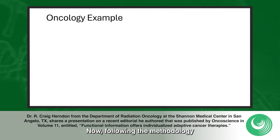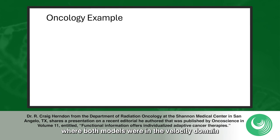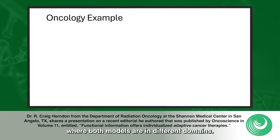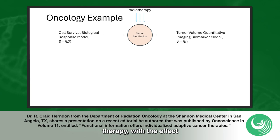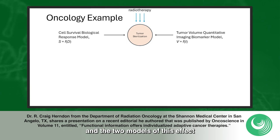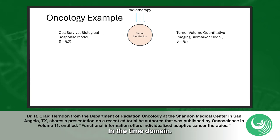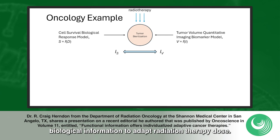Following the methodology just outlined, we proceed from the simple mechanics example, where both models were in the velocity domain, to a complex biological example where both models are in different domains. The oncology example is drawn from radiation therapy, where the effect being modeled is tumor sterilization, and the two models of this effect are a cell survival model in the dose domain, and a tumor volume model in the time domain. Functional information allows you to use biological information to adapt radiation therapy dose.